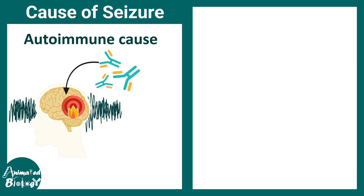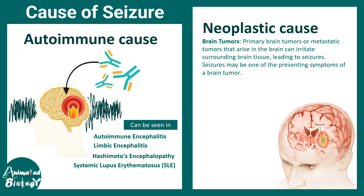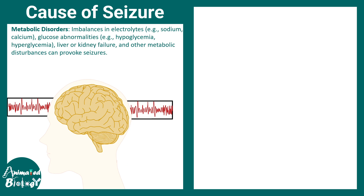Other causes of seizures include autoimmune disorders. Several autoimmune conditions are associated with seizure susceptibility, for example autoimmune encephalitis, limbic encephalitis, Hashimoto encephalopathy, and systemic lupus erythematosus. Brain tumors are also a cause — seizure development is pretty commonly seen in individuals with a brain tumor.